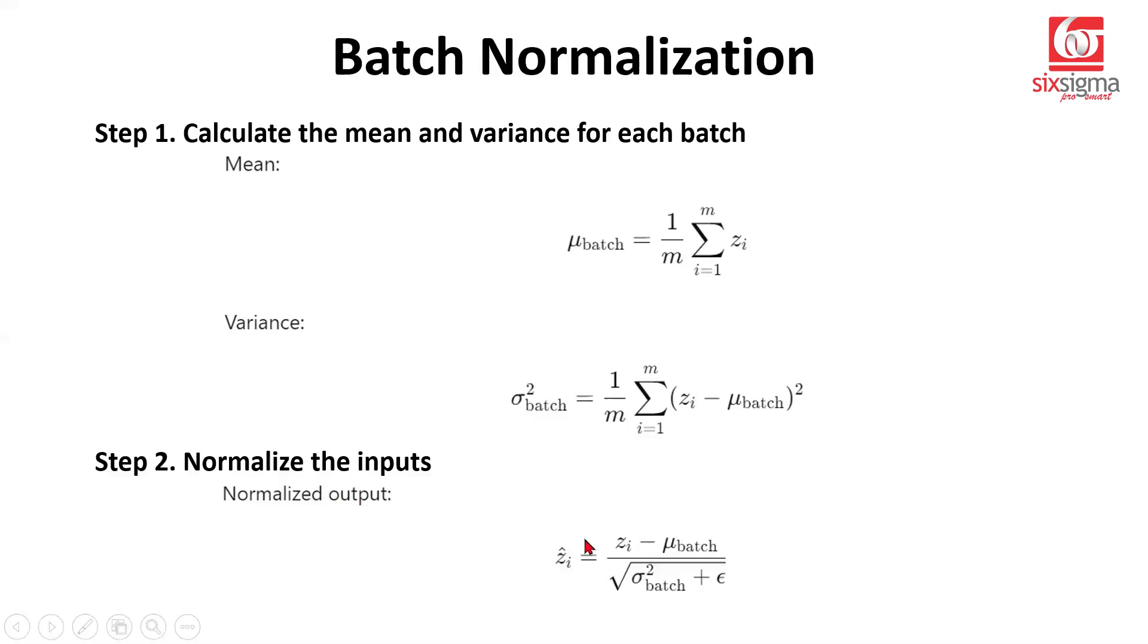Now the step two would be normalization, which is Zi minus the average for the batch, which we've computed here, divided by the standard deviation. Where M here represents the number of observations in a batch. It's like the division by the counts for each batch that we are doing. And this epsilon here that we add is basically a smoothing parameter, which ensures that if we have the variance as zero, we don't run into an error. Zero division is a problem, we know that. So there's a very small numerical value that we want to add to ensure that if we run into a situation of zero variance, we don't end up dividing by zero because that leads to errors.